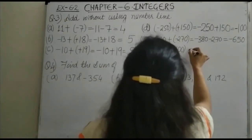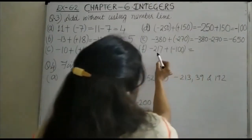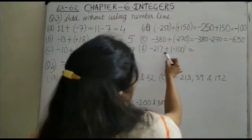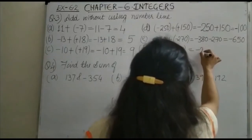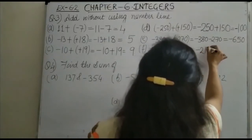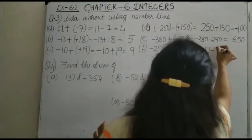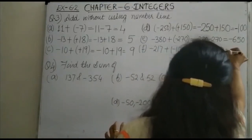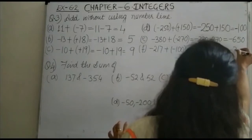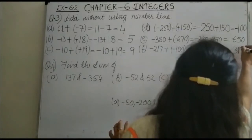Here you also have two negative numbers: -217 and -100. Since both are negative, you add them, and this gives you -317.